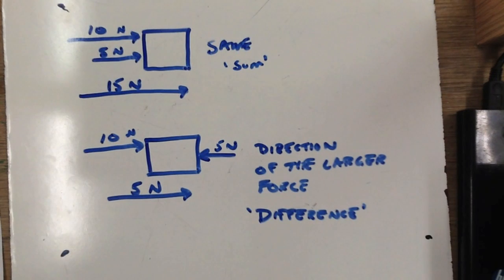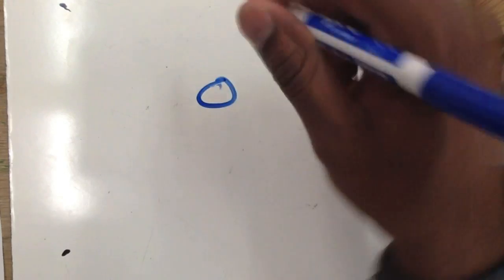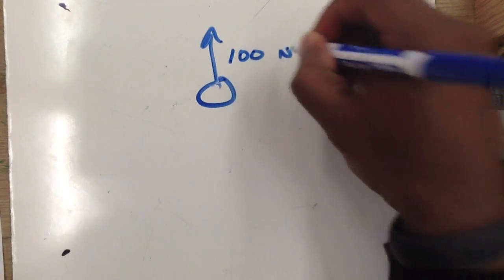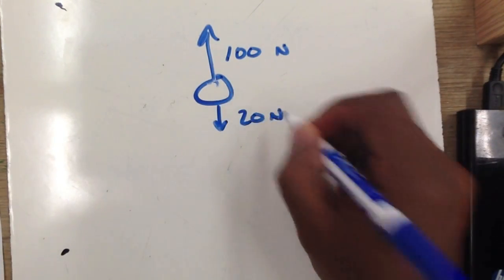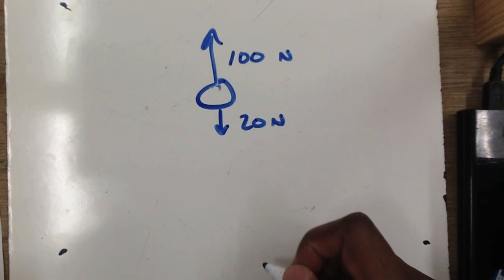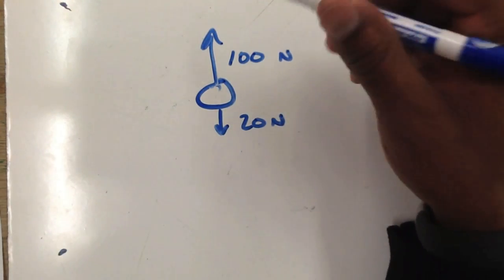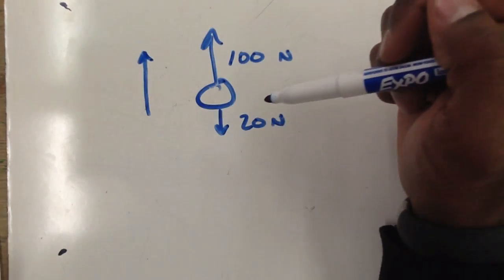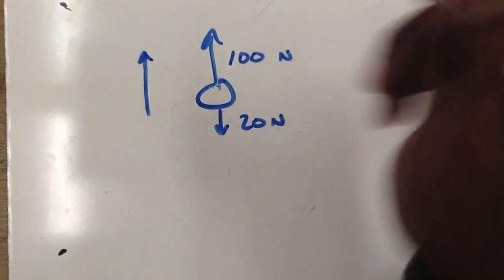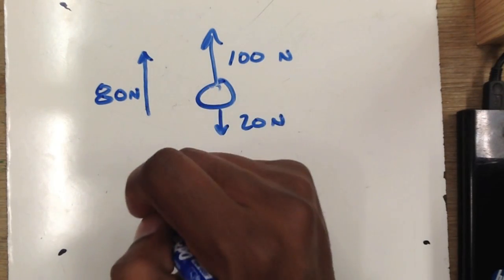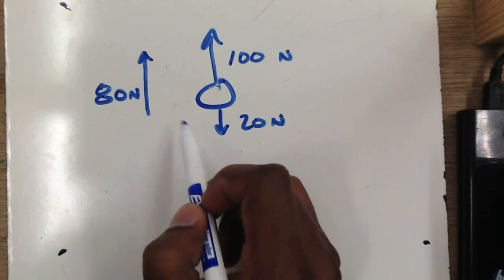Here's another example. Say an object has a force of 100 newtons pulling it upward and a force of 20 newtons pulling it downward. These forces act in opposite directions, so the net force is first of all upward — because the net force is in the direction of the larger force — and the magnitude is 100 minus 20, which equals 80 newtons upward. Because force is a vector, it has both size and direction: size is 80 newtons, direction is up.